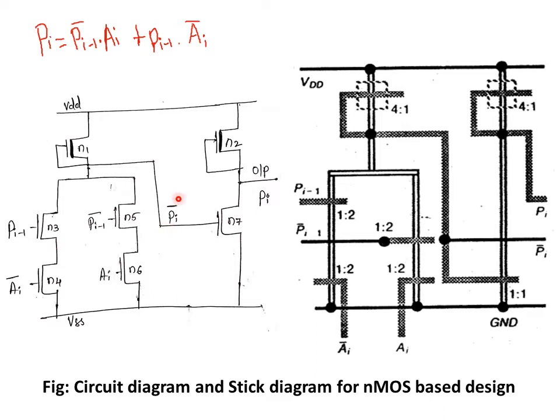For the plus (OR) operation, we need a parallel connection. N3, N4 and N5, N6 are each in series, and those pairs are connected in parallel. However, the NMOS basic design output is always inverted. Since we need the non-inverted output, we must connect one more inverter. Transistors N2 and N7 represent the inverter circuit to invert pi-bar, so finally we get the correct pi output.